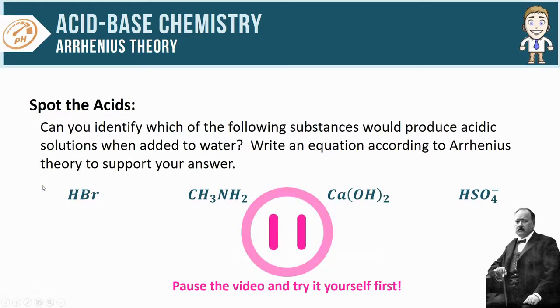Now let's officially close this out with a little practice. There are four substances listed here. See if you can identify which of them would produce acidic solutions when added to water and if you find them write an equation for those according to the Arrhenius theory to support your answer. Go ahead and pause the video and try that yourself first.